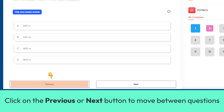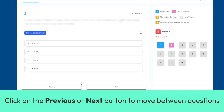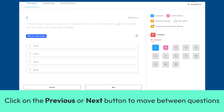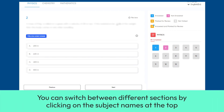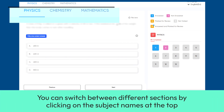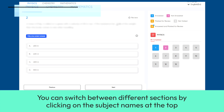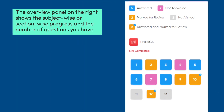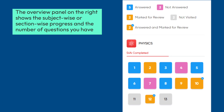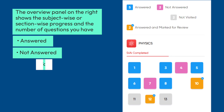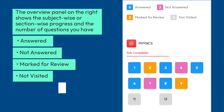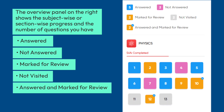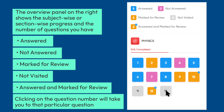Click on the Previous or Next button to move between questions. You can switch between different sections by clicking on the subject names at the top. The Overview panel on the right shows the subject-wise progress and the number of questions you have answered, not answered, marked for review, not visited, and answered and marked for review. Clicking on the question number will take you to that particular question.